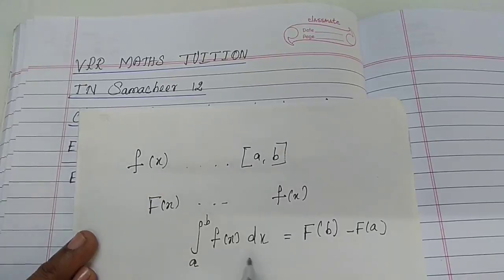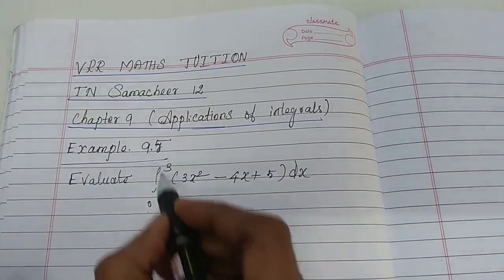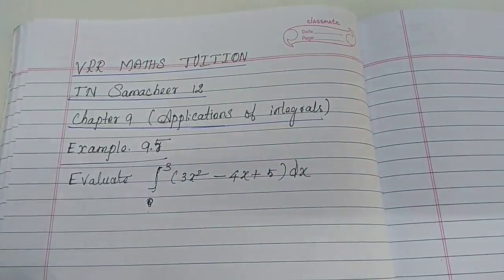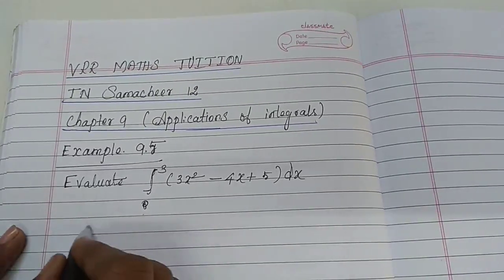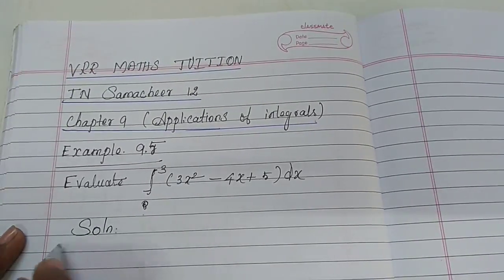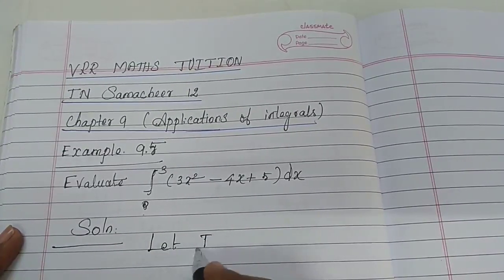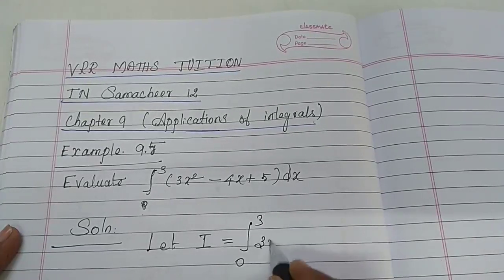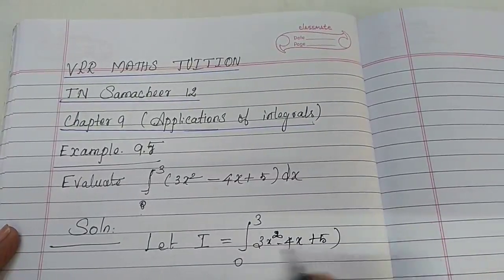The 2nd Fundamental Theorem of Integral Calculus is very easy to evaluate the question. Let our integral from 0 to 3 of (3x squared minus 4x plus 5) dx be equal to I.